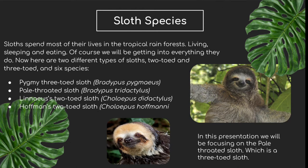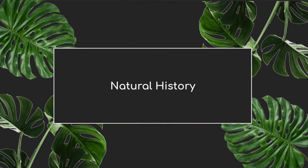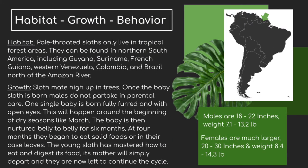Now we're going to be talking about natural history, covering habitat, growth, and behavior. Pale-throated sloths usually live in tropical forest areas in really high-up trees. They can be found in northern South America, mostly in areas such as western Venezuela, Colombia, Brazil, and north of the Amazon River. The climate there is much warmer, with more rainfall and rainforest.